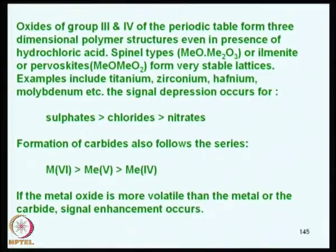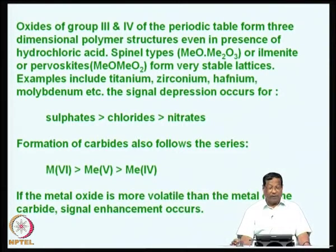We are discussing oxide formation in flames. Spinel types of the form MEO, ME₂O₃ (metal dioxide), and perovskites of MEO·MEO₂ type form very stable lattices. Examples include metals such as titanium, zirconium, hafnium, and molybdenum.